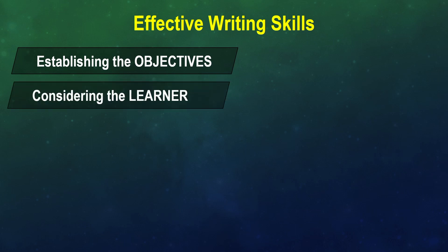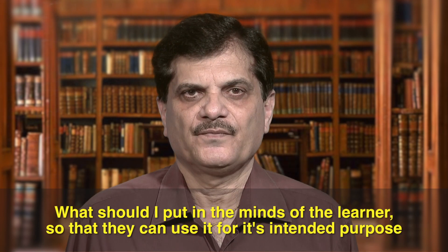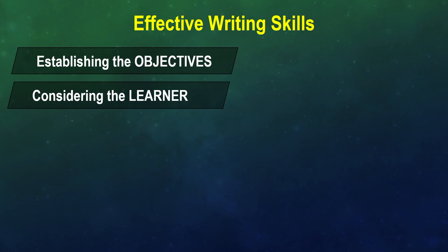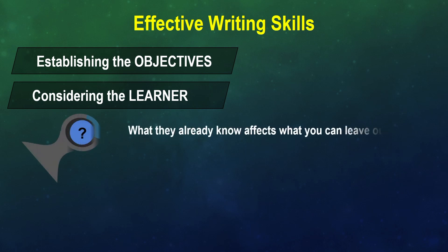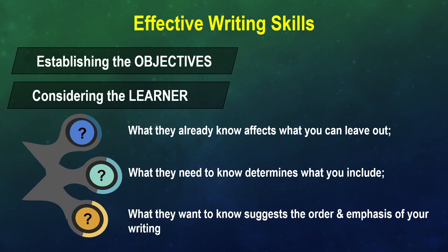Secondly, considering the learner. When deciding what to put in a self-learning material, ask yourself: what should I put in the minds of learners so that they can use it for its intended purpose? Identify the target group and consider its characteristics. There are three considerations: what they already know affects what you can leave out; what they need to know determines what you include; and what they want to know suggests the order and emphasis of your writing.